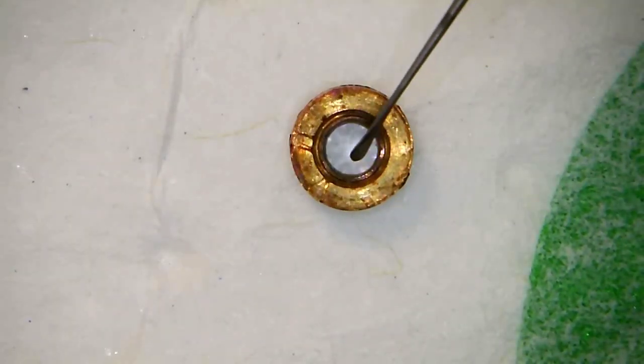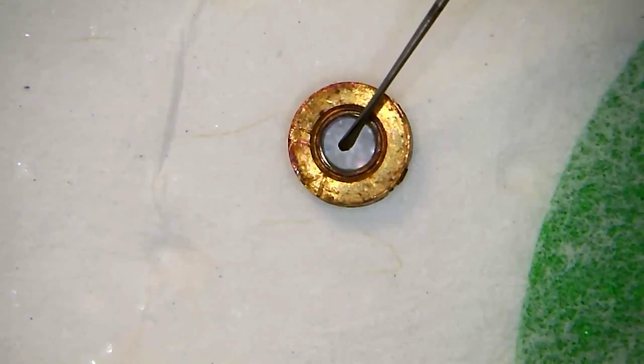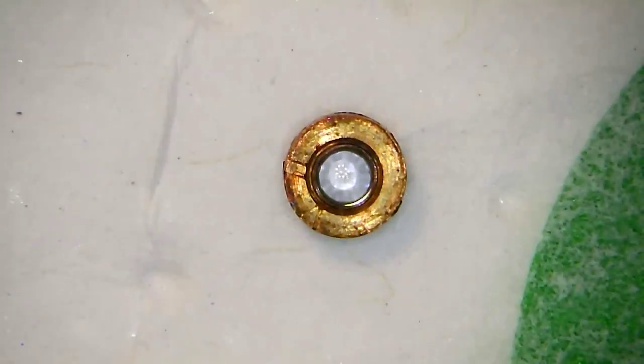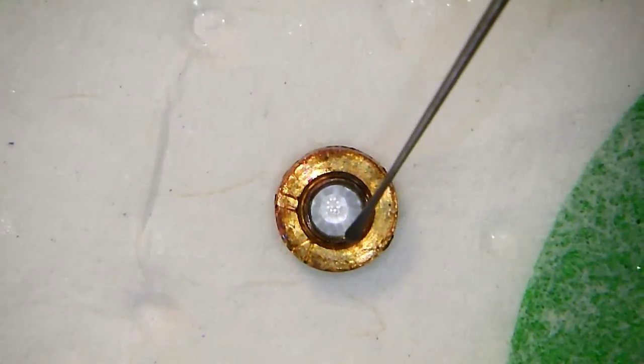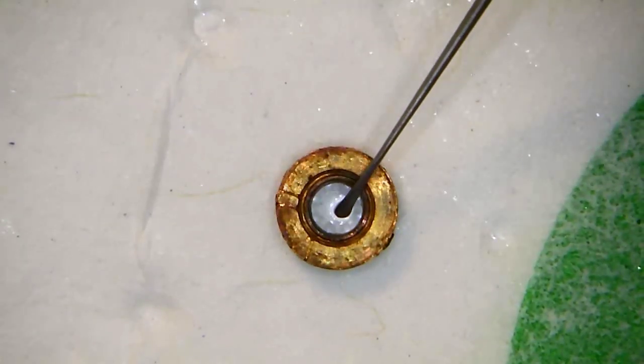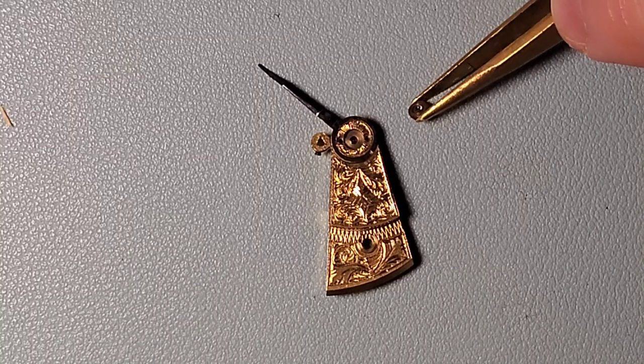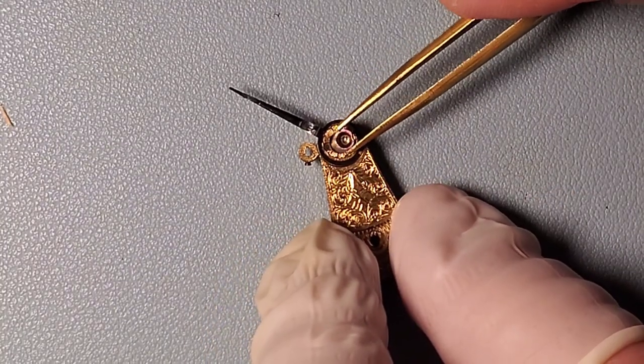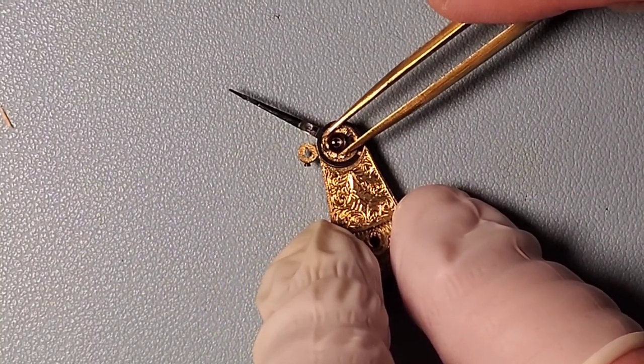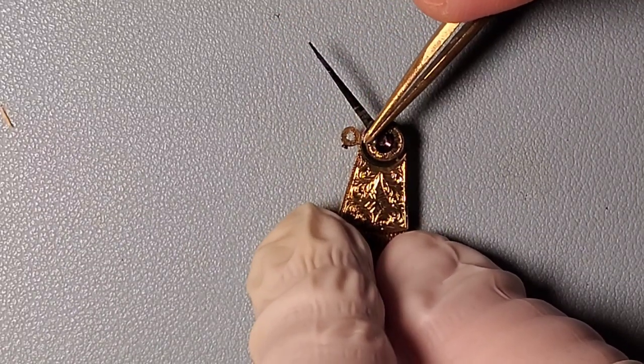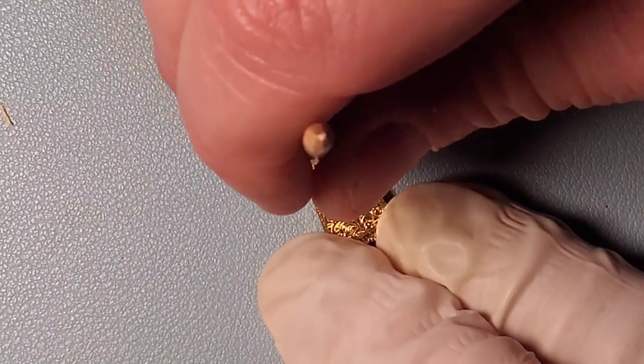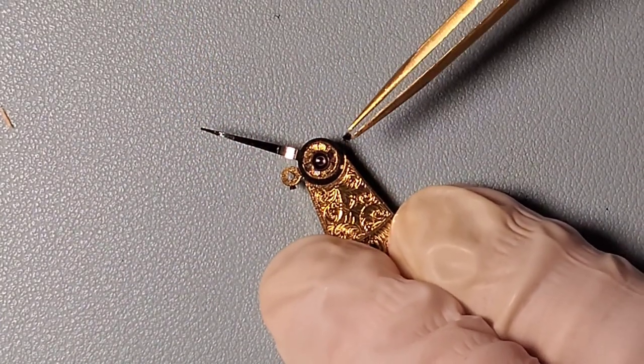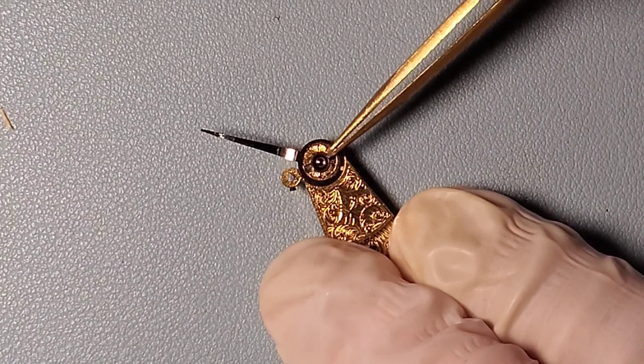Now here I'm applying oil to the cap jewel. This is Mobius 9010 that I'm using and I apply just a small drop into the center of that jewel. Now flipping the jewel over and placing it on top of the hole jewel. Now with both jewels in I press the cap jewel firmly into place and reinstall the two screws.